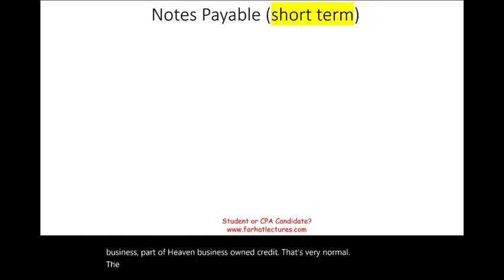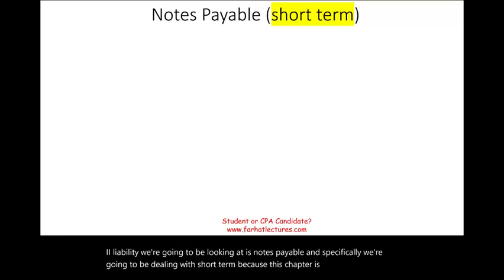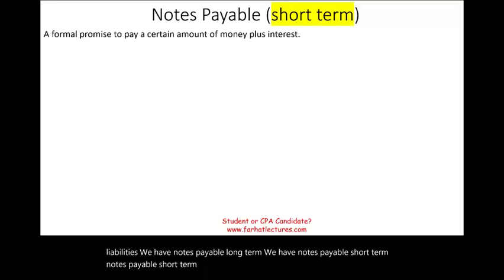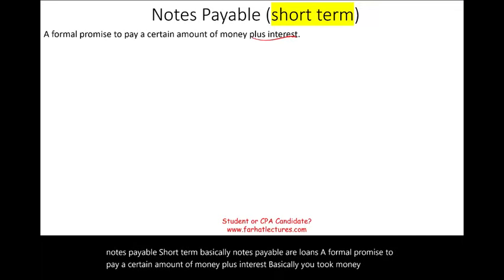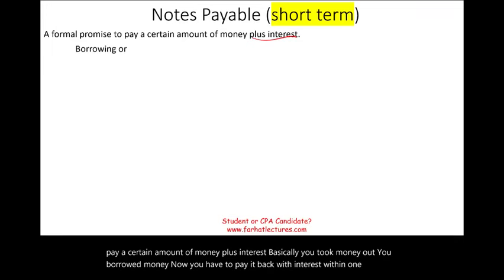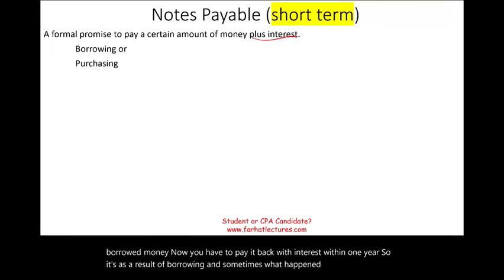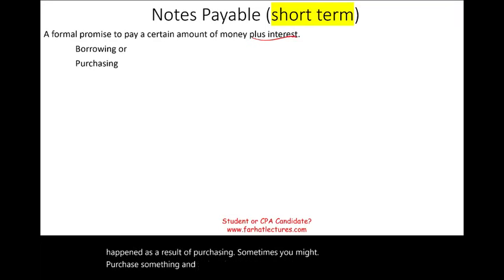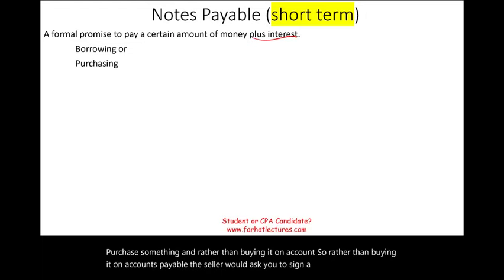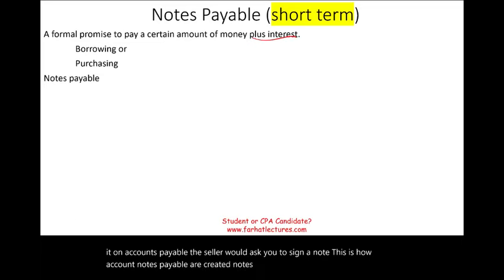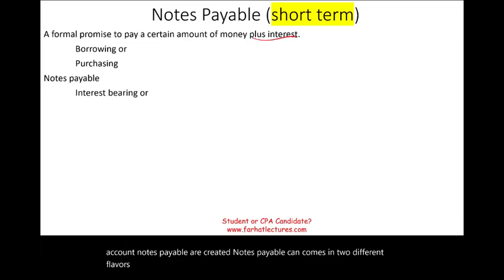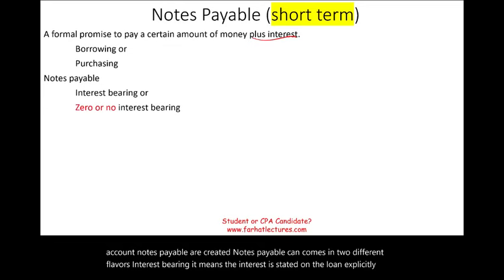The second current liability is notes payable — specifically short-term notes payable, since this chapter is about current liabilities. Notes payable are loans: a formal promise to pay a certain amount of money plus interest, where the amount must be repaid within one year. They can arise from borrowing or from purchasing, when a seller asks you to sign a note instead of buying on open account. Notes payable come in two types: interest-bearing (where interest is explicitly stated) and zero or non-interest-bearing.